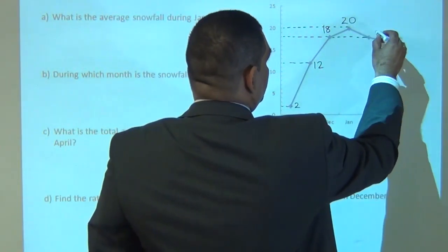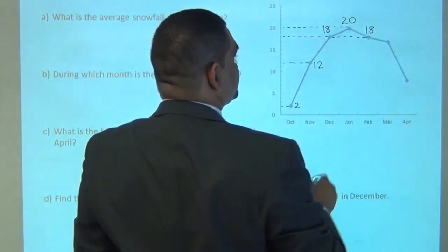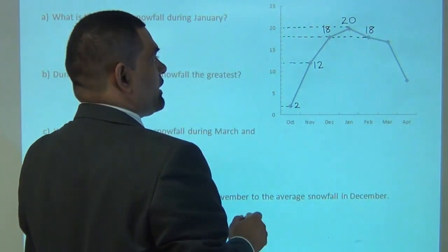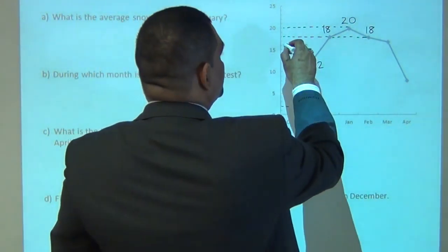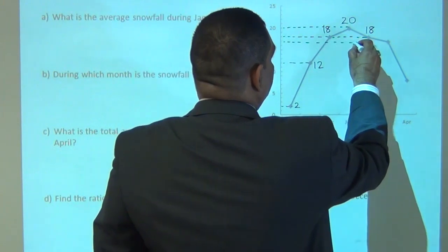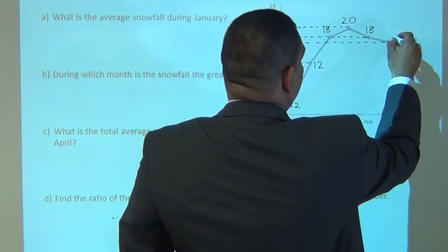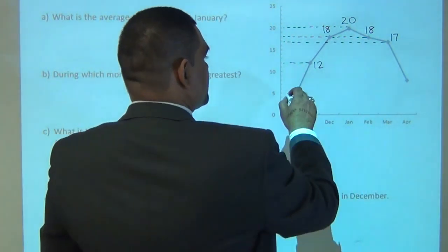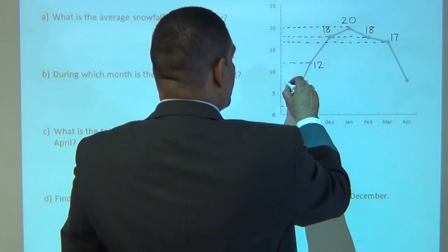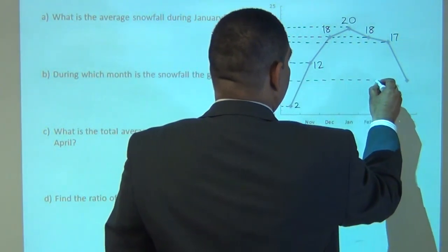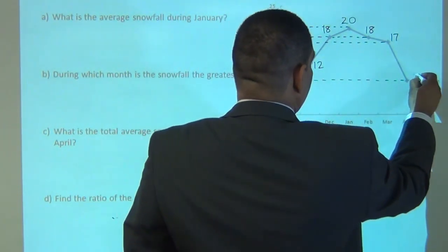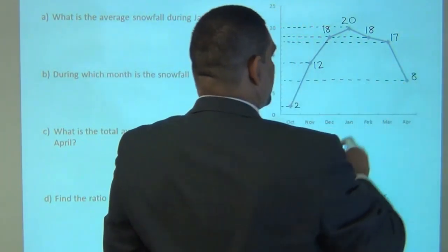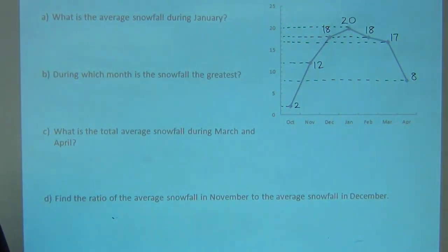In February, 18 inches again. In March, 17 inches. And in April, 8 inches. Now from this, let's answer the questions.